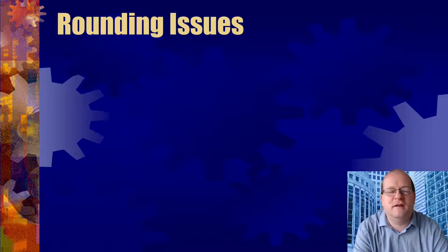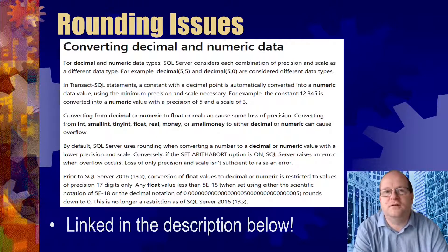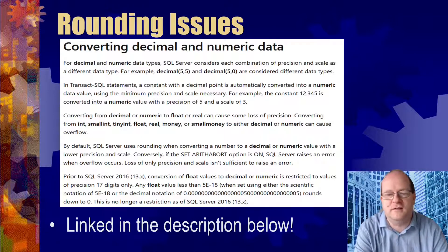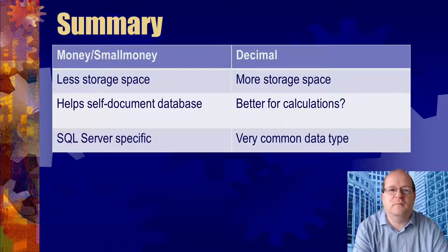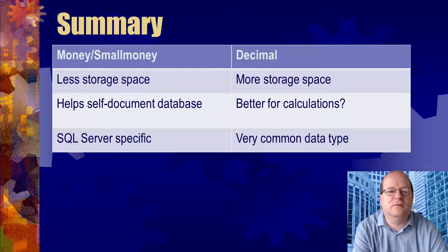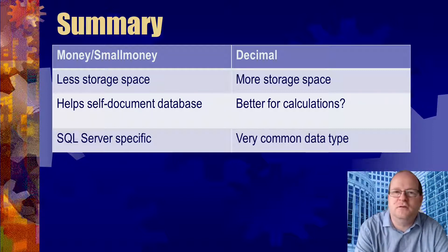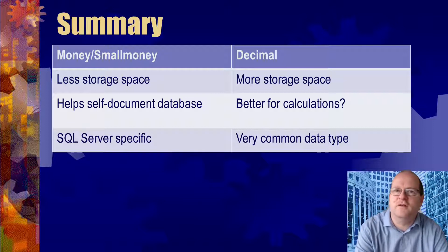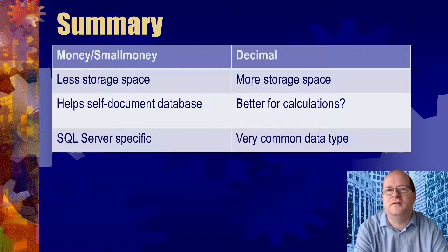We should also consider rounding issues. There is an article that goes into the complex details of how rounding can affect decimal, money, and small money data types, so if you're writing very precise financial applications, take that into account. To summarize: money and small money can take up less storage space and help you self-document your database, but they are SQL Server specific. Decimal is often preferred by many developers — it takes slightly more storage space, but is said to be better for calculations and is supported by pretty much every relational database.